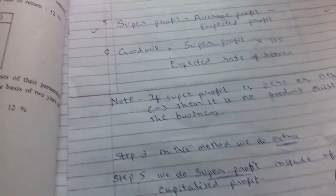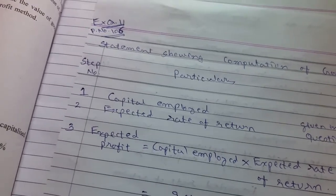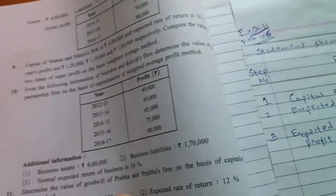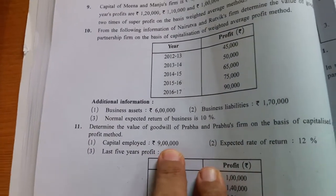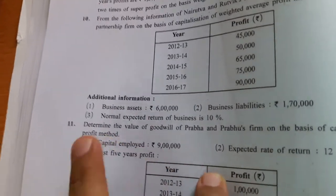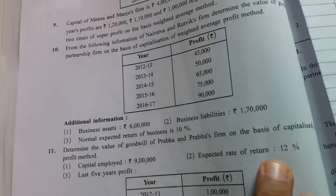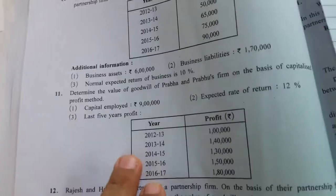Now let us see question number 11, which is in your textbook on page number 106. Determine the value of goodwill of Prabha and Prabhu's firm on the basis of the capitalized super profit method. Capital employed is directly given as 9 lakh, so no need to apply the formula of total assets minus total liabilities. The expected rate of return is 12%, so 12/100 is to be considered.